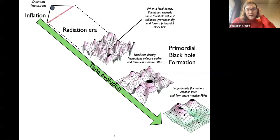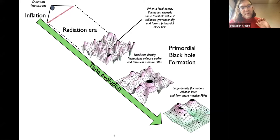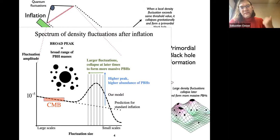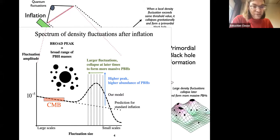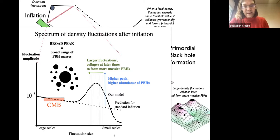Let's start with PBH formation. The basic idea is that if there are some pre-existing large inhomogeneities in the universe, and at some region it exceeds a threshold value, then the inhomogeneity will collapse gravitationally and form a black hole. Inhomogeneities that are smaller typically re-enter inside the Hubble horizon at earlier times and form less massive black holes, while larger ones form more massive black holes. The problem is that the threshold is of order one, so you need an over-density of order one to produce a primordial black hole. But on cosmological scales we see fluctuations of order 10 to the minus 5 in the CMB.